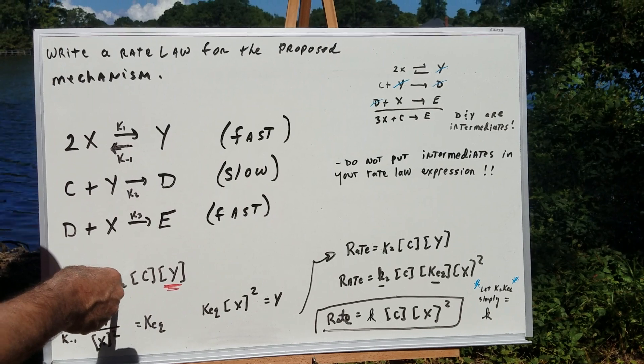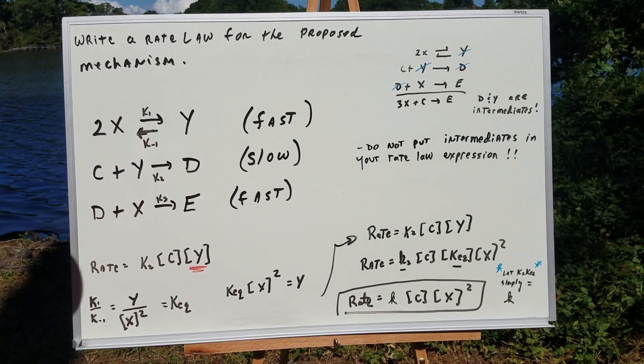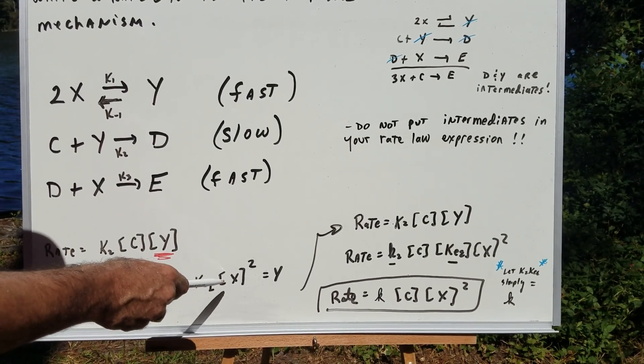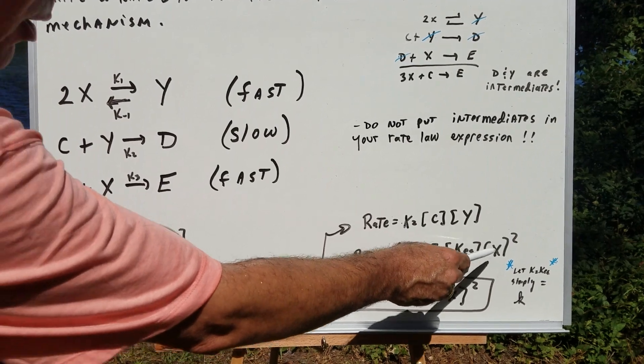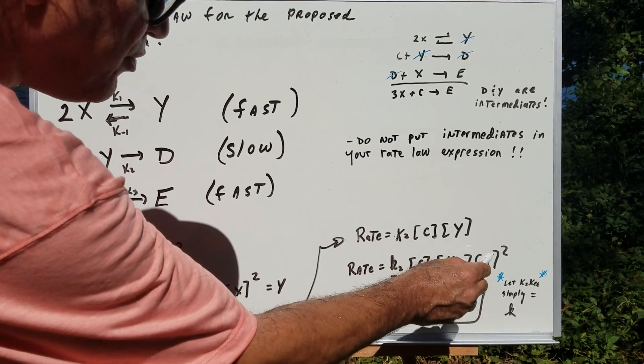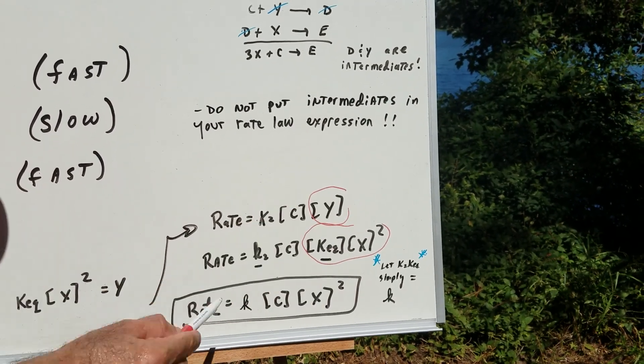So I go back to my rate law expression. That was the slow step. Rate equals K2 times C times Y. But we now know Y is KEQ X squared. So I now put in KEQ X squared for Y. So this term here is substituted for the Y term.